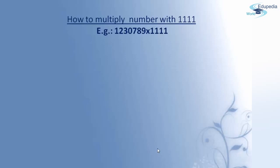The example I am going to take in this session is 12,30,789 × 1111. Before going to use the shortcut, at first we have to count the number of ones in the series. Here I am having four ones. This gives the idea of how many digits should be added in the multiplicand using the shortcut. Since we have four ones, we have to add four digits at a time to get the answer. So let's start.